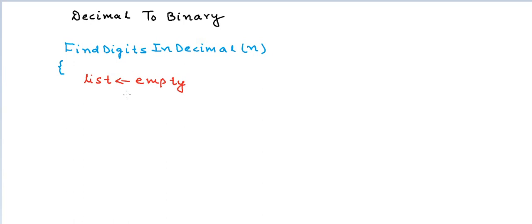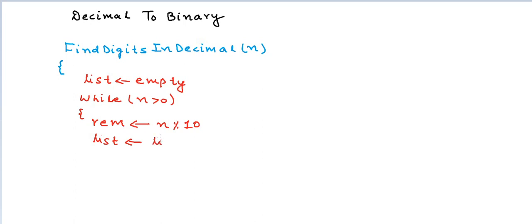This list in an actual program could be an array of integers or an array of characters or whatever suits you. The program goes like: while n is greater than zero, perform n modulo 10 and store the value in a variable called remainder. This remainder is actually the digit in the rightmost position. Add this digit to the list, so list becomes list plus remainder. Now reduce n to n divided by 10, and if n is an integer this will always give us the quotient. When we get out of this loop, we get a list of all the digits of the number in its decimal form, from right to left. We could reverse the list to get the digits from left to right.